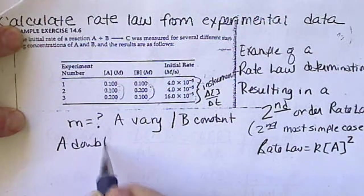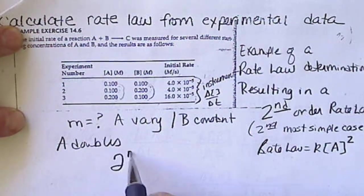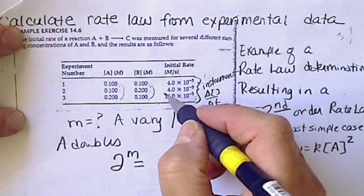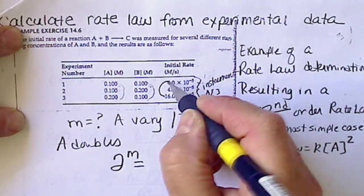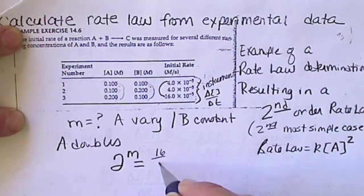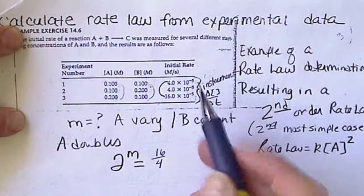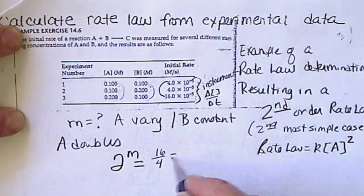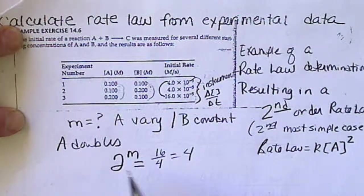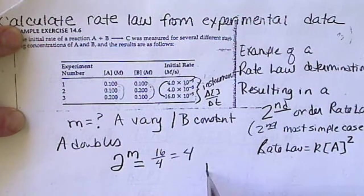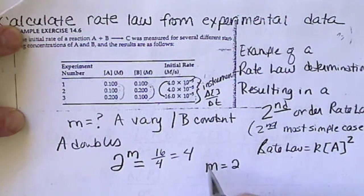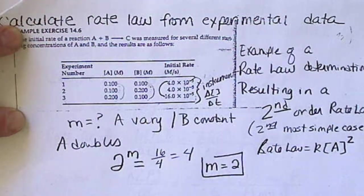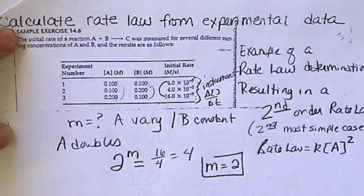So, A doubles. That means 2 to the M equals. Now, I compare these rates. 16 over 4, and those are going to cancel anyway, is equal to 4. So, 2 to the M equals 4, so I can tell that M equals 2. My exponent on A has to be 2.